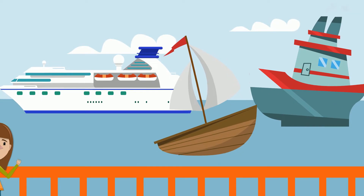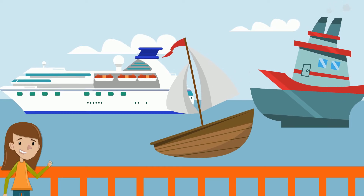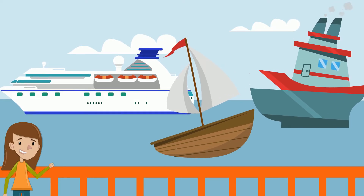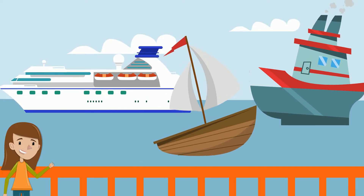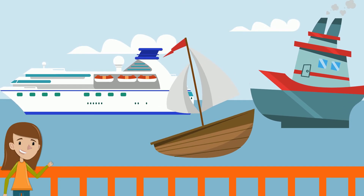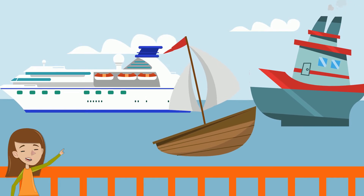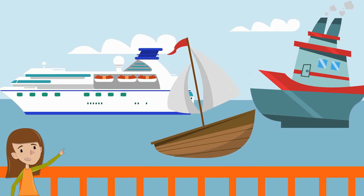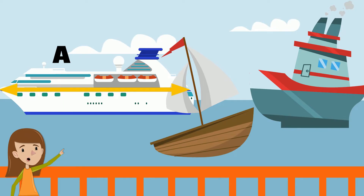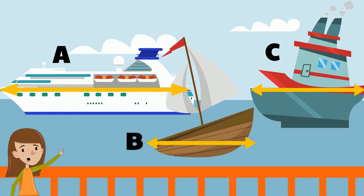Her town is on the seaside so she also came to see the ocean. Right now she is seeing three ships. Which of them is the longest? Ship A, B, or C? The answer is ship A.